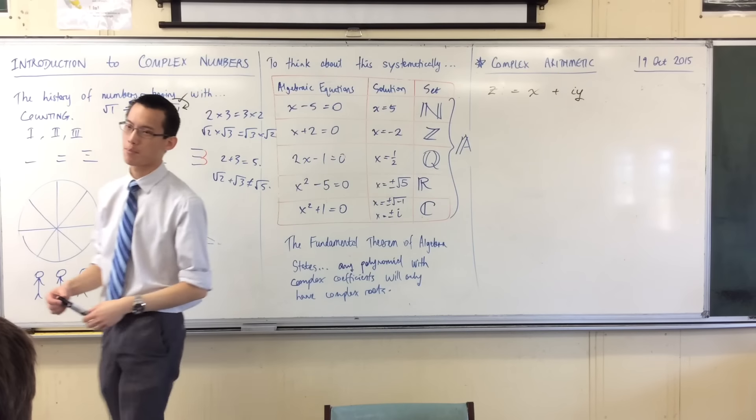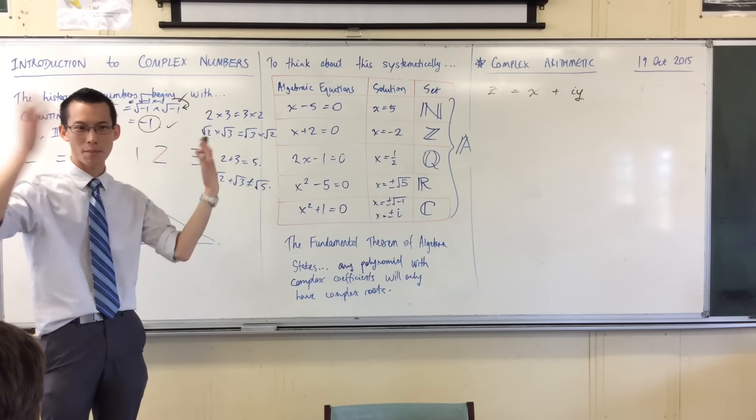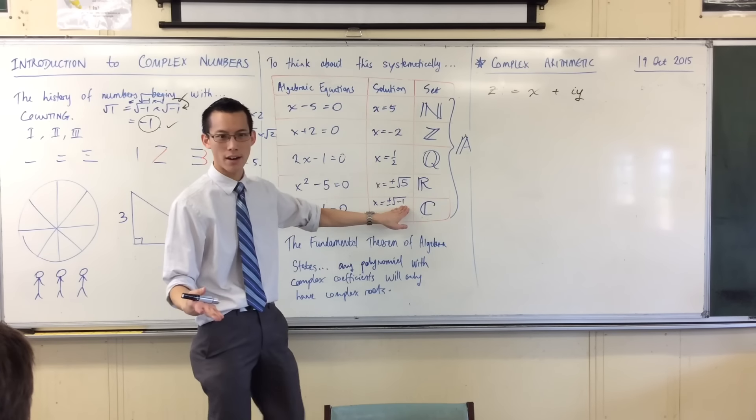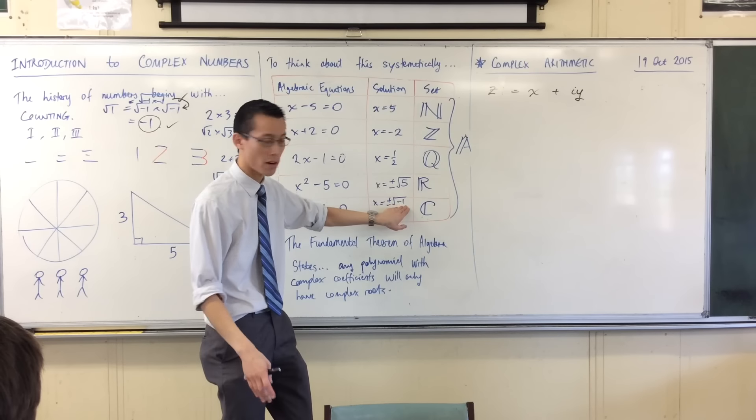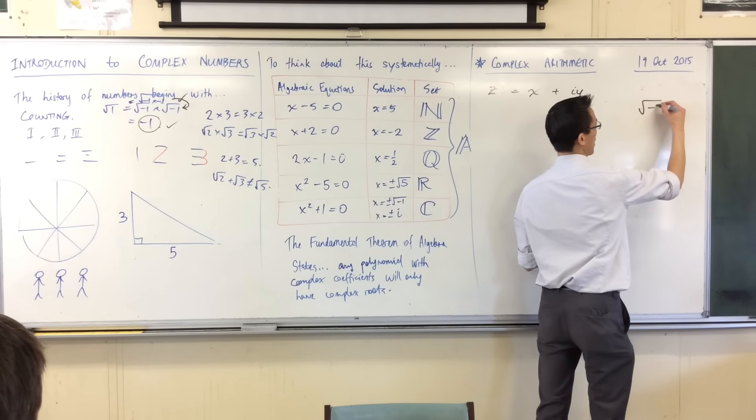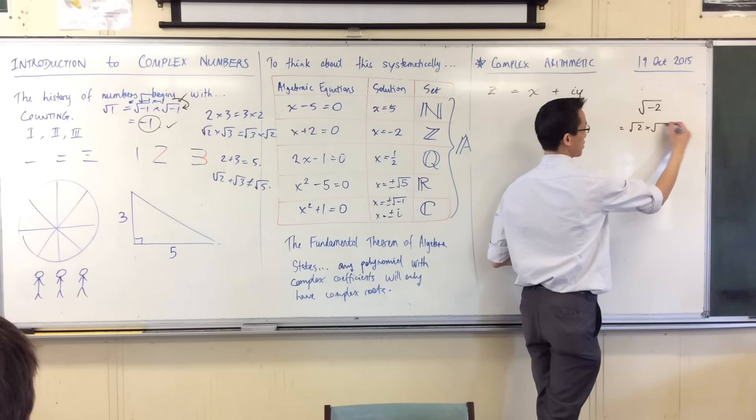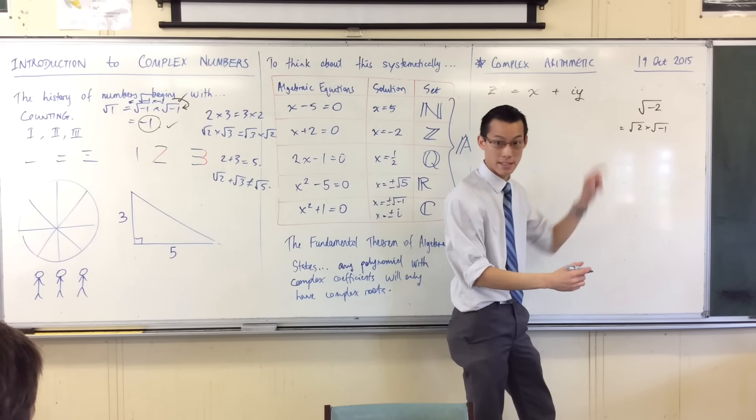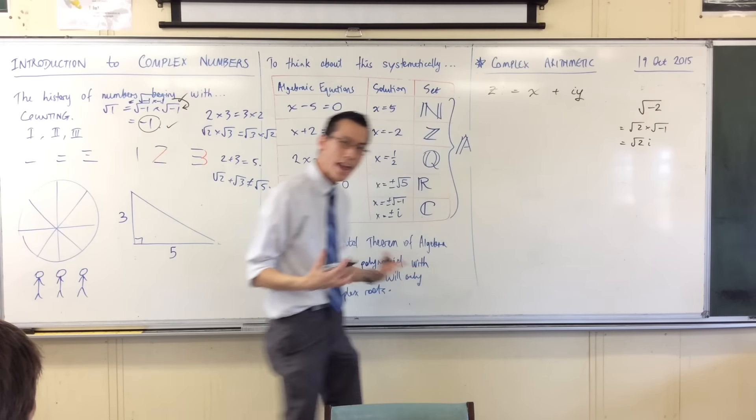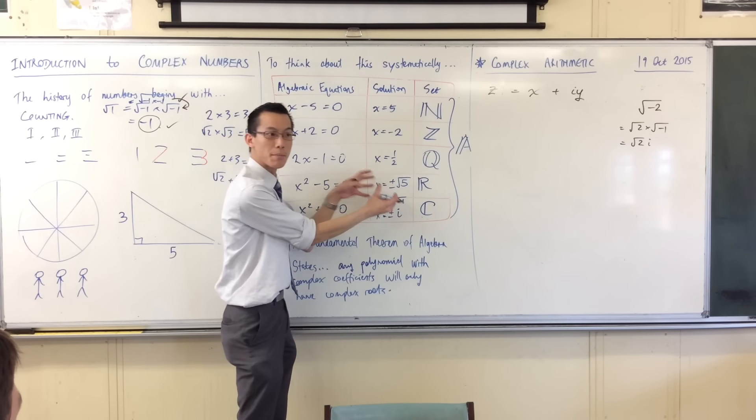Now, when I first started learning about complex numbers, I was like, why? Why square root of minus one? Why not square root of minus two or minus three or whatever? And the reason why is because everything is a product, every imaginary number is a product of the square root of minus one. For instance, the square root of negative two is really just the square root of two times the square root of minus one. That's actually okay. So this is the square root of two times i. So I can write every square root of a negative number in terms of this one. So this is like a fundamental piece if you like.